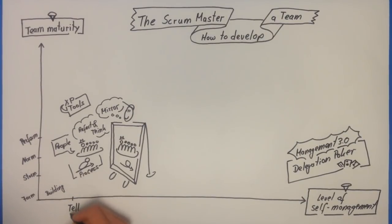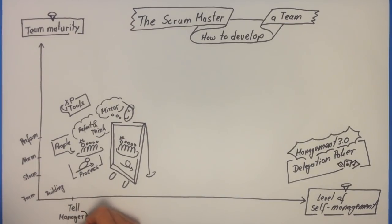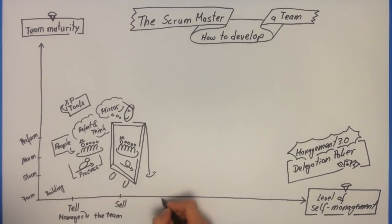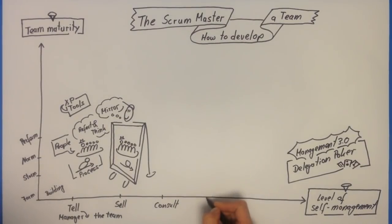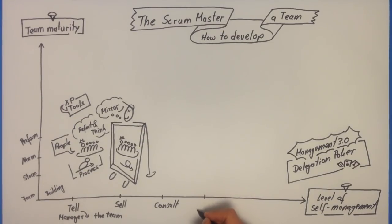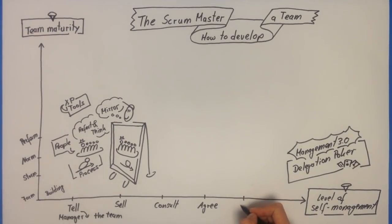In command-and-control, management tells the team what to do and how to do it. Then when you go further, management explains more, or at least I hope so — and then it sells the idea of what they want to do. The better approach when aiming for an Agile team is that management starts asking the team, consulting them. And what really comes into action in Agile is that you all agree — you sit in one boat and reach consensus.